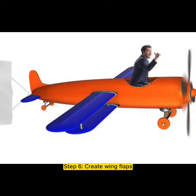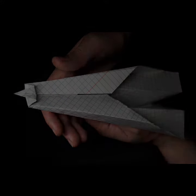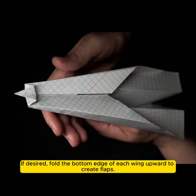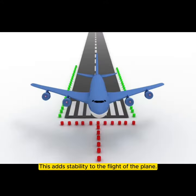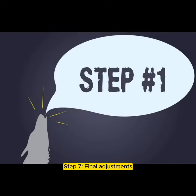Step 6: Create wing flaps. If desired, fold the bottom edge of each wing upward to create flaps. This adds stability to the flight of the plane.